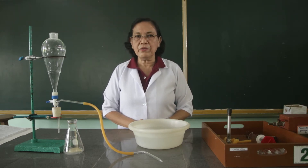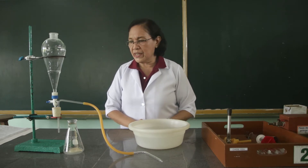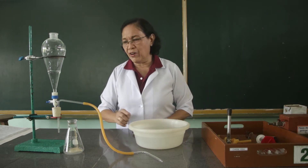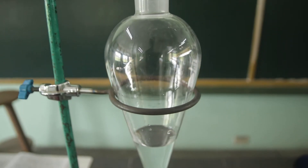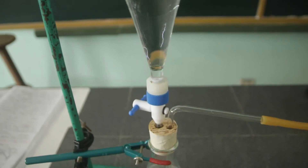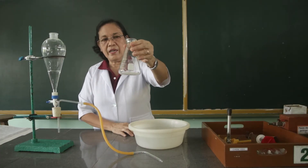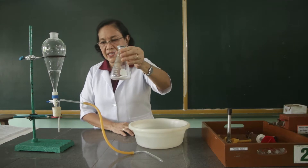Now, we are going to collect the acetylene gas by using this generator. This is what we call the acetylene generator. I have here in the Erlenmeyer flask the calcium carbide.